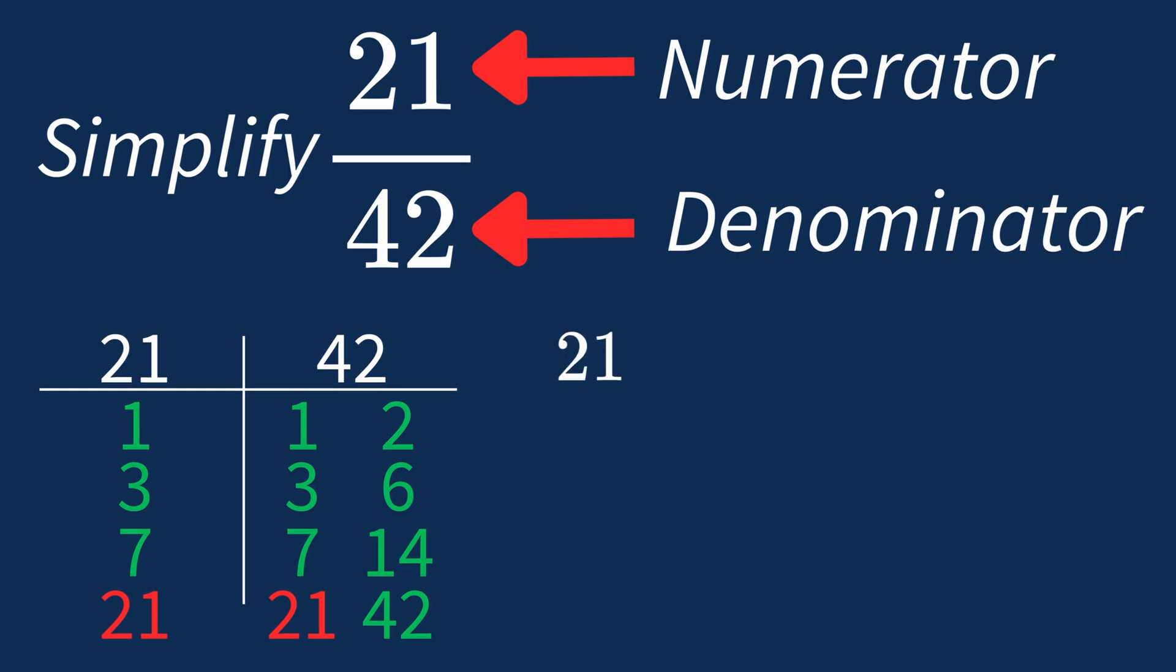Dividing the numerator, 21 by 21, gives us 1. Dividing the denominator, 42 by 21, gives us 2, since 42 divided by 21 is 2.